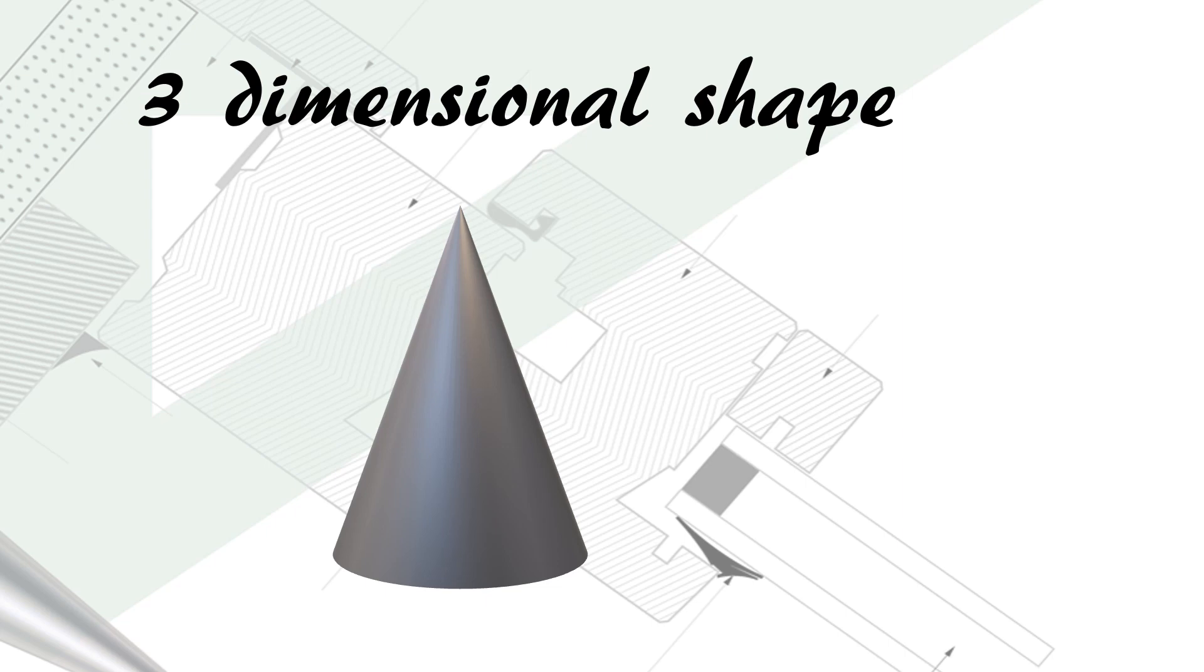Here is the first of two triangular shapes in three dimensions. This one is called a cone. The reason for that is the base of the triangle is round or circular.